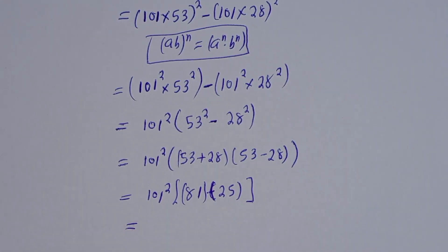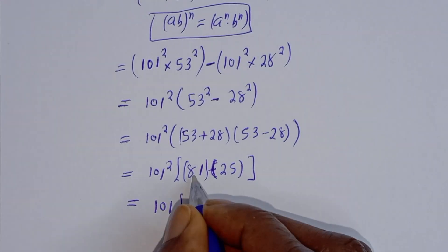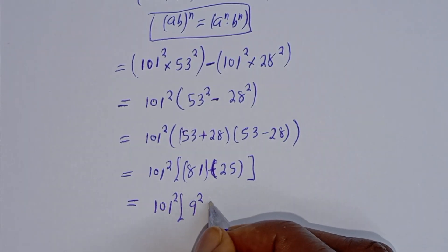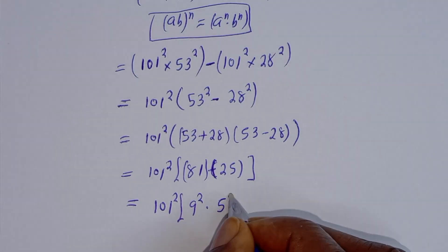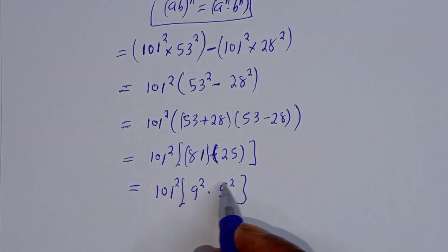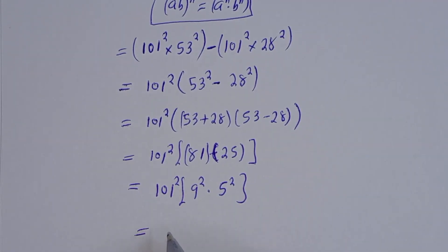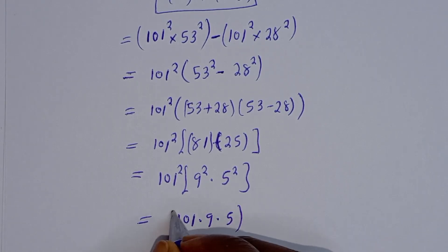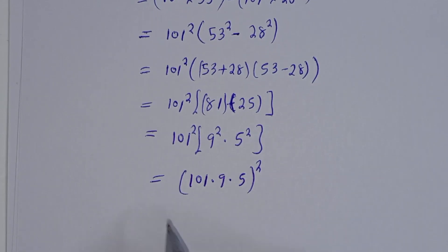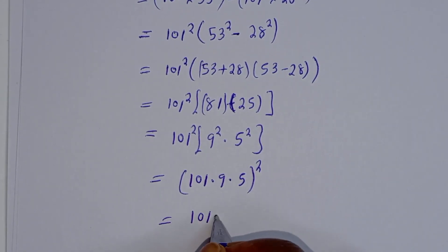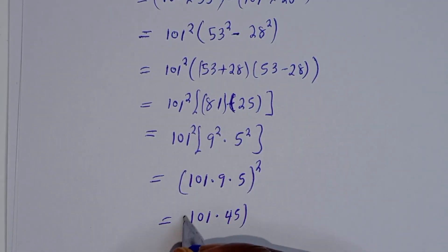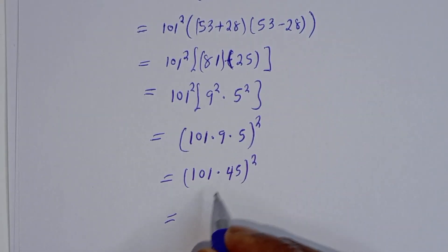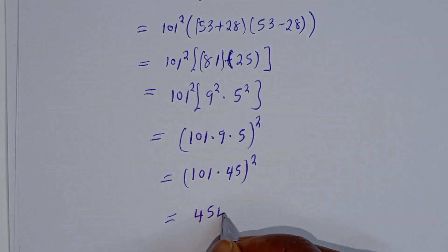And this is equal to 101 squared bracket: 81 is 9 squared, multiplied by 25 is 5 squared. Because of the same power, this can be written as (101 × 9 × 5) squared, which equals (101 × 45) squared, that is 4545 squared.